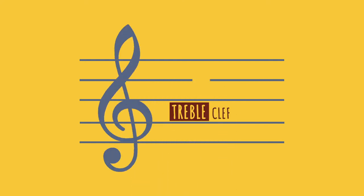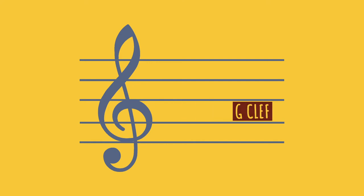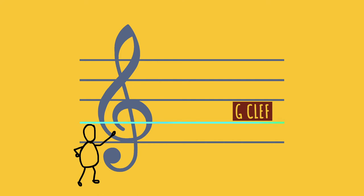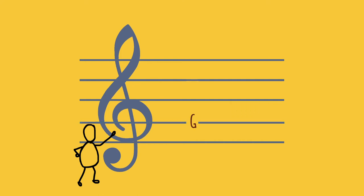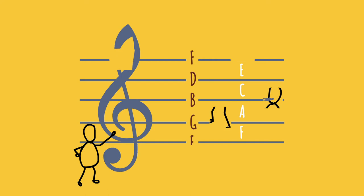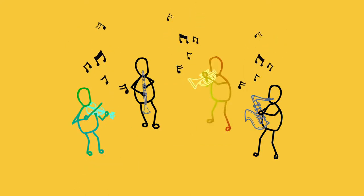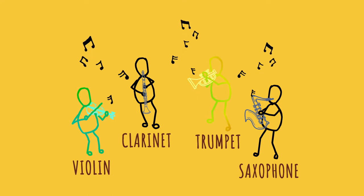One commonly used cleft is the treble cleft, also known as the G cleft. The middle part of a treble cleft loops around the second line of the stave, and this line represents the G note. When a treble cleft is used, notes represented by the lines are E, G, B, D, F, and notes represented by spaces are F, A, C, E. Here are some examples of instruments that use the treble cleft generally.